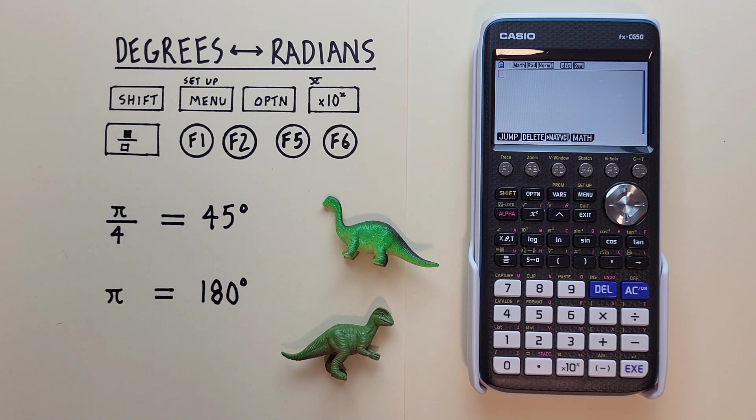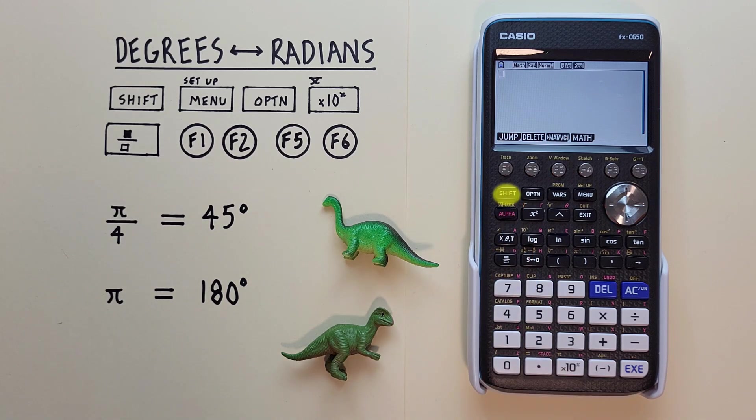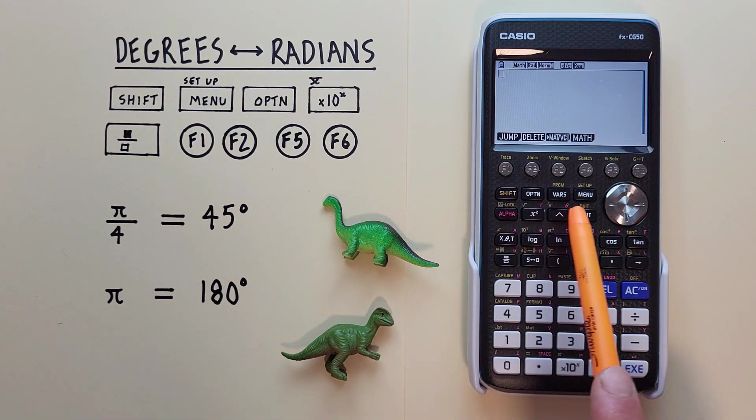To do this, we'll be using the Shift key that looks like this, located here. The Menu key with the Shift function of Setup that looks like this, located here.